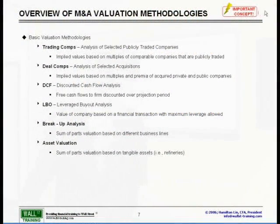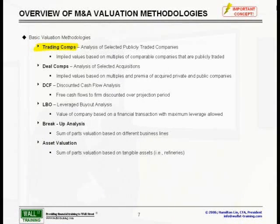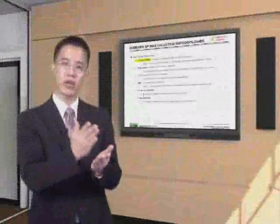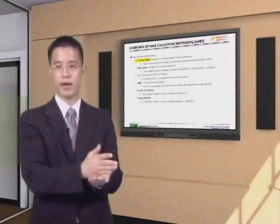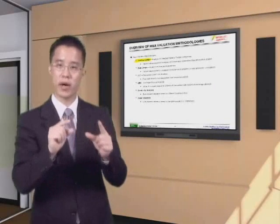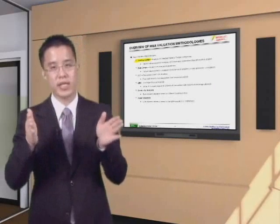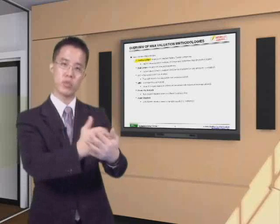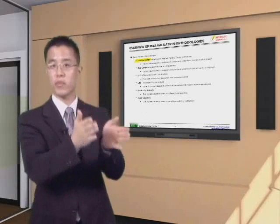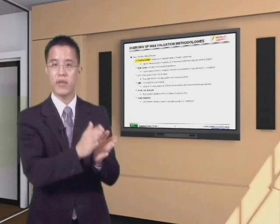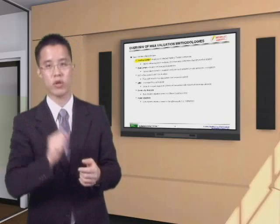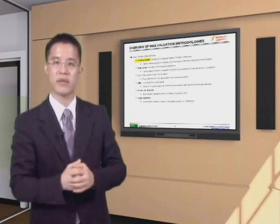On the one hand, we have basic trading comps. Trading comps are analysis of selected publicly traded companies. You take a look at the current publicly traded competitors and see what value the market is placing on these companies at that particular moment. Then you take those multiples implied from current observations of the open market and apply the same valuation multiples and metrics upon the company you are trying to analyze. We will see actual live examples of this.